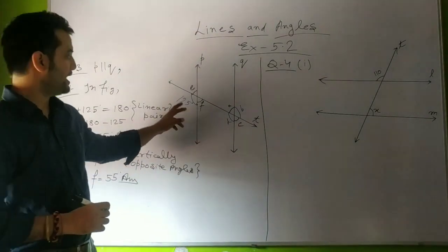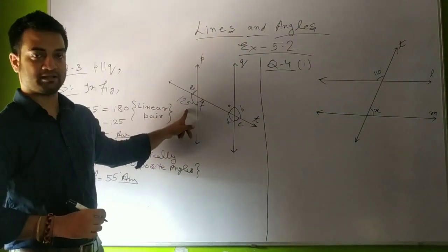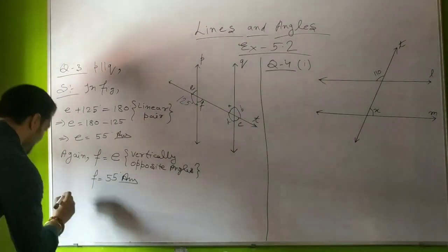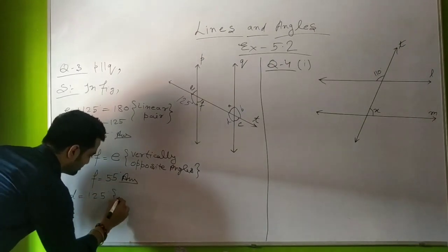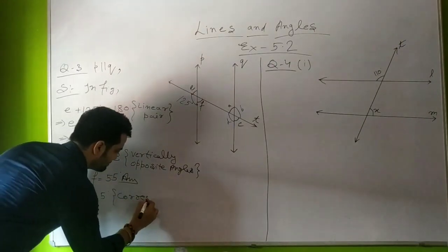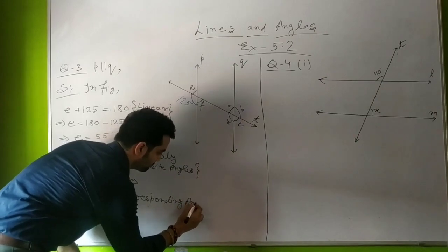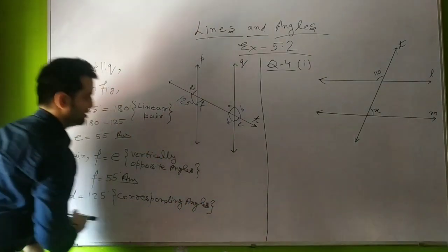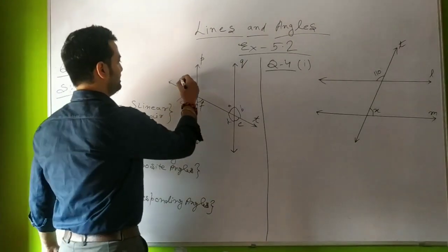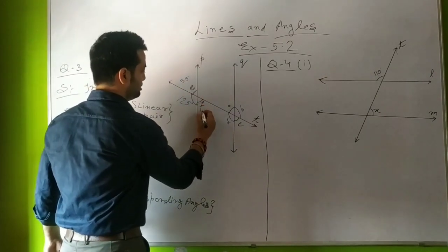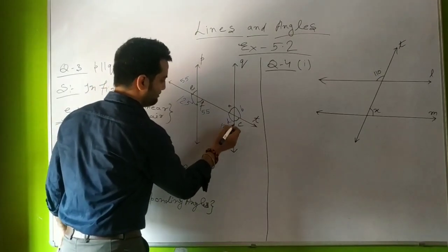If we look at angle D and 125 degrees, these are corresponding angles. So angle D will be equal to 125 degrees. The reason is the corresponding angles property.